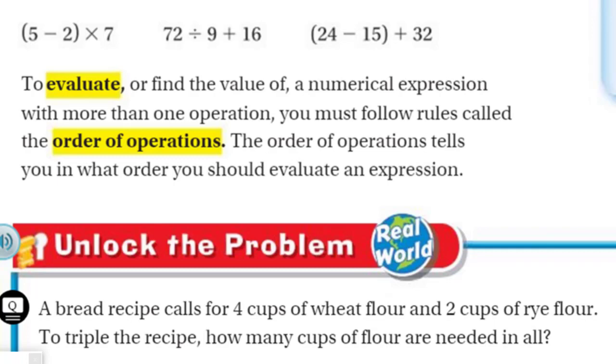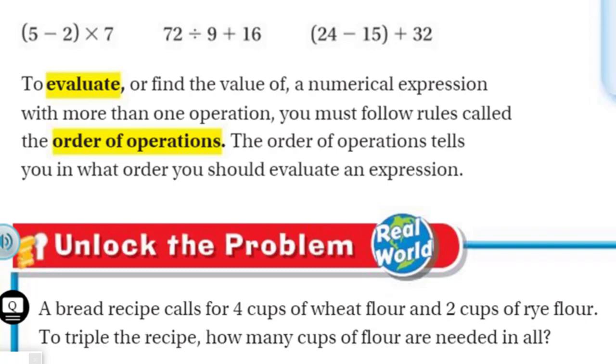Order of operations tells you in what order you should evaluate an expression. And you may be thinking, what is the order of operations? Why is there an order? Because if you look above, we have 72 divided by 9 plus 16. Well, should we divide 72 divided by 9 or should we not and do 9 plus 16? The reason we do the order of operations is you're going to get different answers if you don't follow the rules.